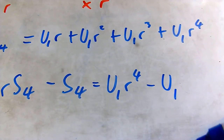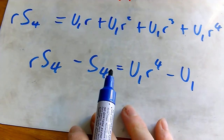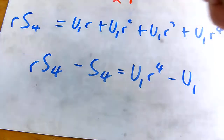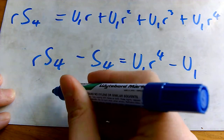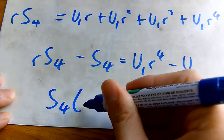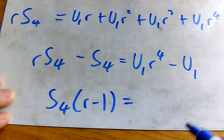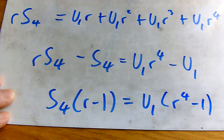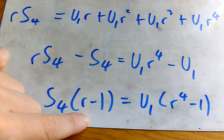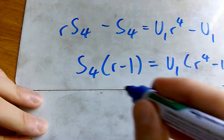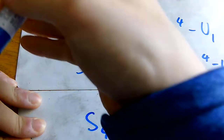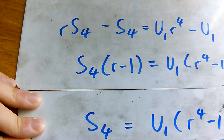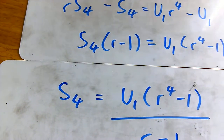At the moment it's not really looking like a sum formula, but what we're going to do is isolate S₄ to get a formula with S₄ as the subject. If we do a bit of factorizing, we get S₄ on its own with (r − 1) in the bracket on one side, and u₁(r⁴ − 1) on the other. Dividing off gives us S₄ = u₁(r⁴ − 1) / (r − 1), which is the sum of the four terms we were looking for.